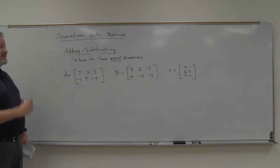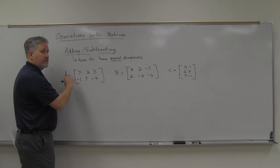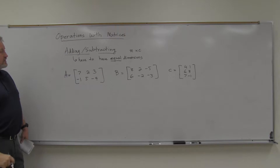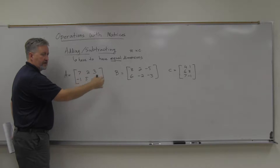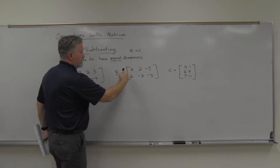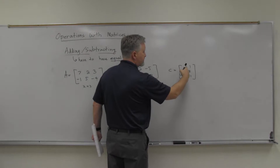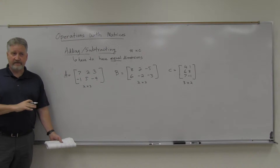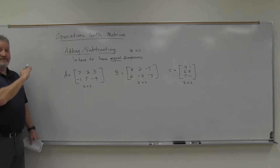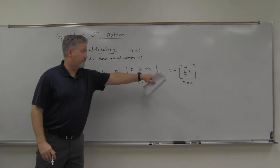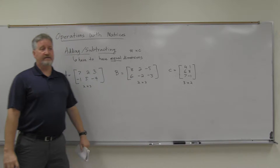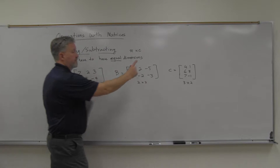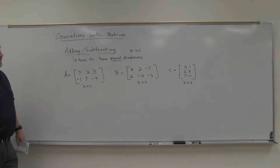B and C have the same dimensions — they're both 2 by 3 (two rows, three columns). But A is 3 by 2 (three rows, two columns). So when adding and subtracting, we can only add A and B — we can't add or subtract C with A or B.